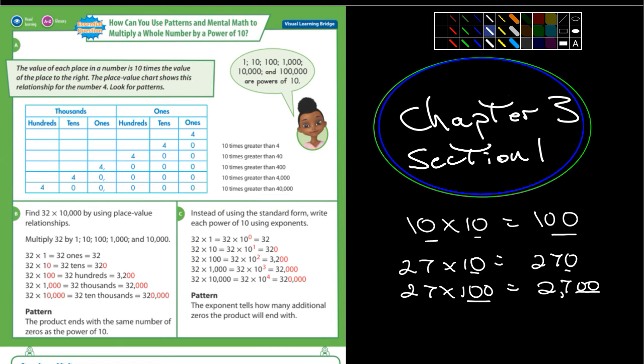So anytime you multiply something by 10, all you do is add a zero. If it's 100, you'd add two zeros. If it's 1,000, you would add three zeros.